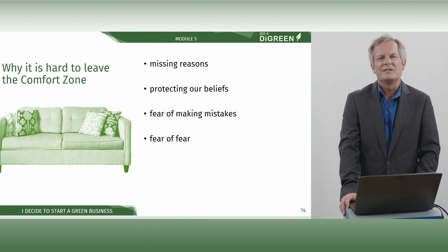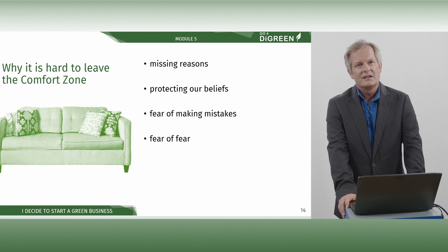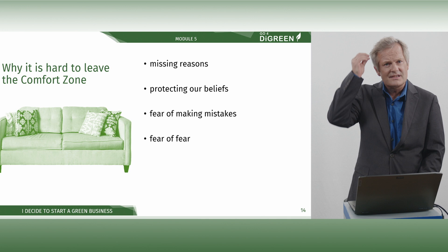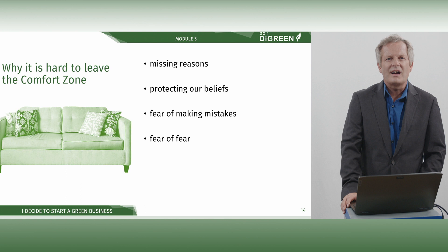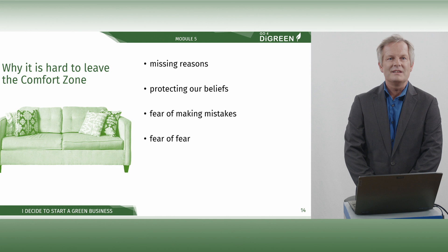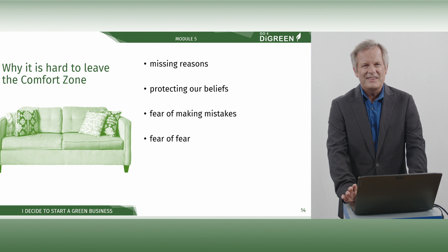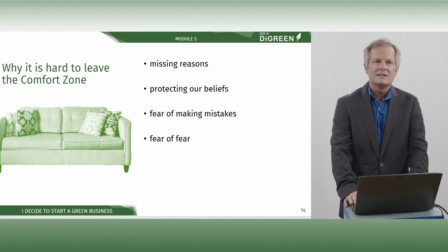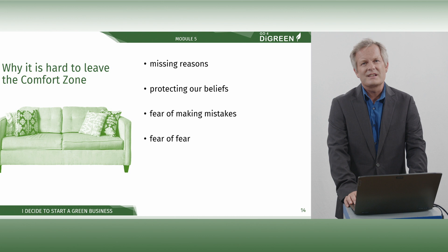Protecting our beliefs. It is not easy to overturn one's own convictions. Brain research confirms it: changing beliefs means changing many neural connections. That's why we protect our beliefs. We avoid counter-evidence and specifically seek confirmation for our version of the truth. We stay in our comfort zone to protect our beliefs. And then there is fear of making mistakes. At school, we were often punished when we made a mistake. Because of this, we have learned to be afraid of making mistakes, and that is why we want to avoid them. Outside the comfort zone, the danger of making mistakes is great. Out of self-protection, we therefore often stay in our comfort zone.